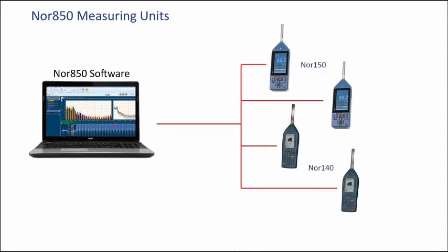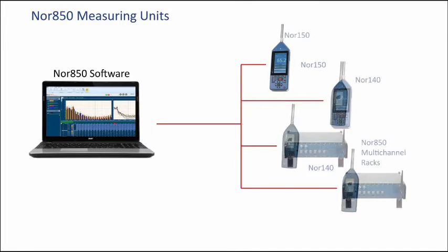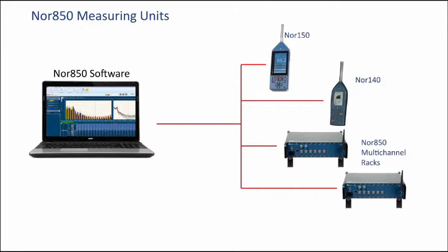Multi-channel measurement capability may be extended as the needs grow. Start with one or two of the NOR150 analyzers or several of the NOR140 analyzers and increase step-by-step by adding additional units. Or mix and match with the NOR850 racks, each containing one to ten measurement channels. Flexible configurations allow users to operate a multi-channel system one day or individual measuring units another day.